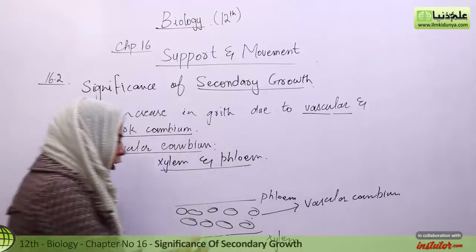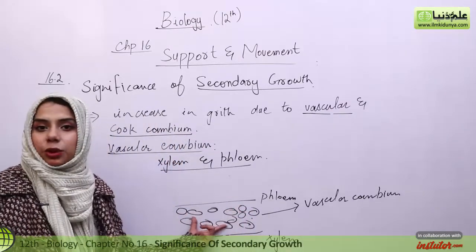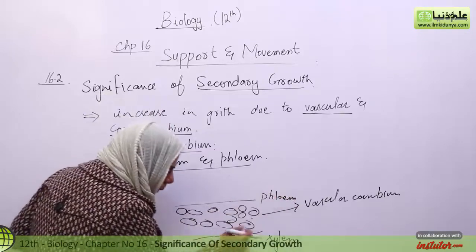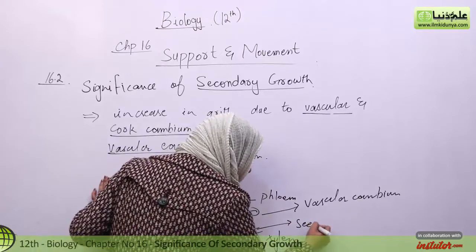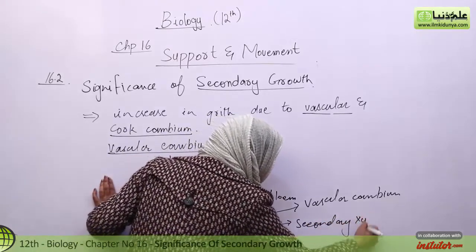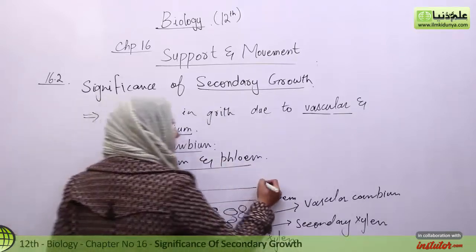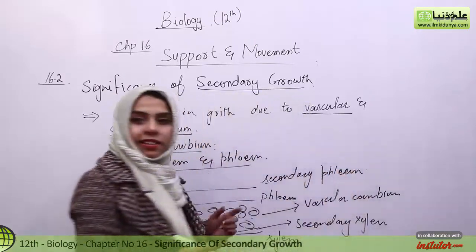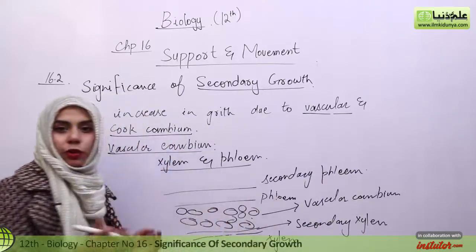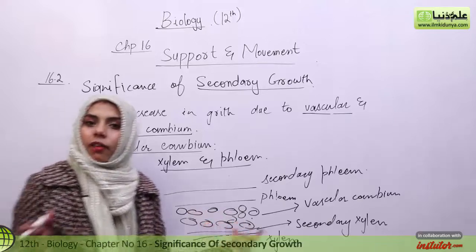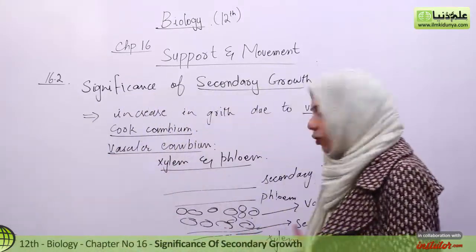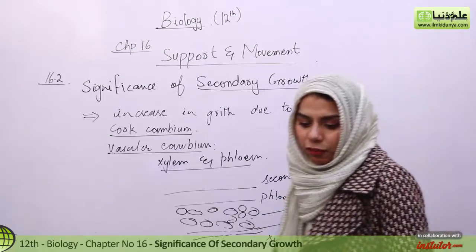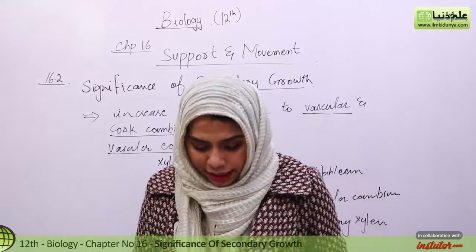When the vascular cambium cells are actively dividing, they give rise to secondary xylem and secondary phloem. On the inner side, secondary xylem will form, and on the outer side, secondary phloem will form. This increases the width of the plant.